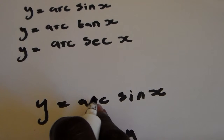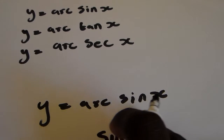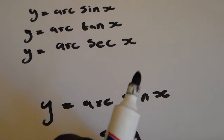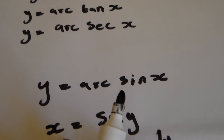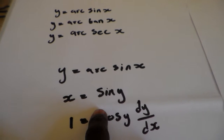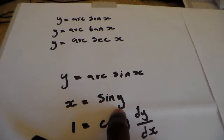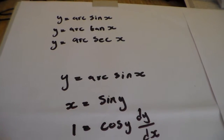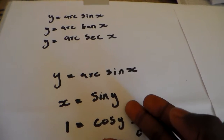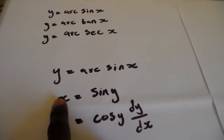When we have to derive this formula, we're going to say y is equal to arcsin x. To remove the arcsin, we're going to swap the values of x and y, so we're going to have x is equal to sin y.